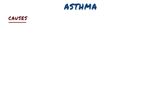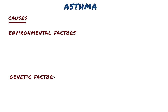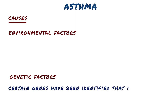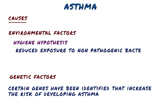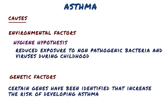Asthma is caused by a combination of complex and incompletely understood environmental and genetic interactions, as certain genes have been identified that increase the risk of developing asthma, and having a family history of asthma also increases risk. For environmental factors, there's the hygiene hypothesis, which attempts to explain the increased rates of asthma worldwide as a direct and unintended result of reduced exposure to non-pathogenic bacteria and viruses during childhood, due to increased cleanliness and decreased family size in modern societies. Exposure to bacterial endotoxin in early childhood may prevent the development of asthma, but exposure at an older age may provoke bronchoconstriction. Evidence supporting the hygiene hypothesis includes lower rates of asthma on farms and in households with pets.